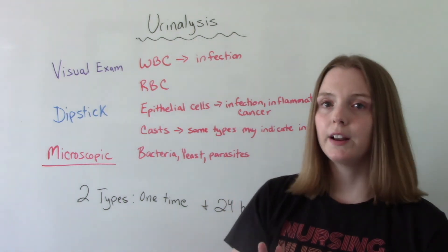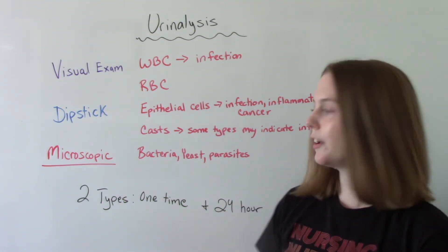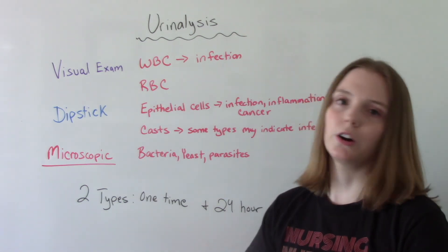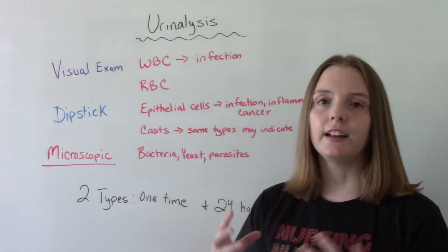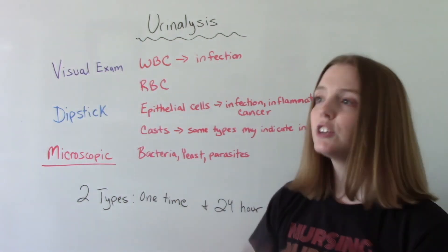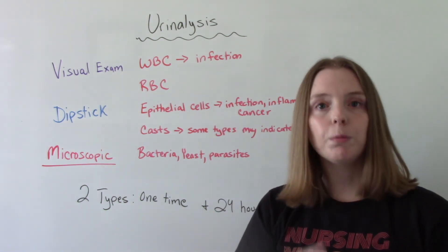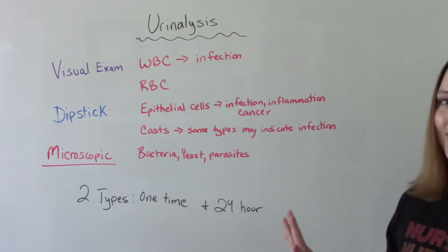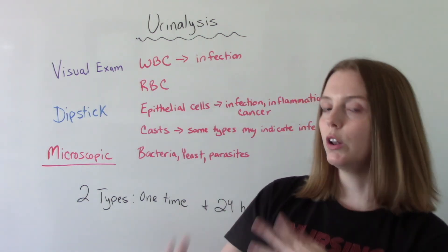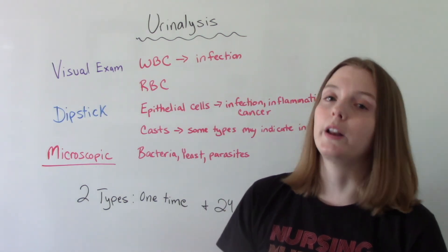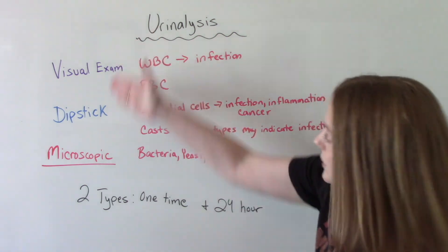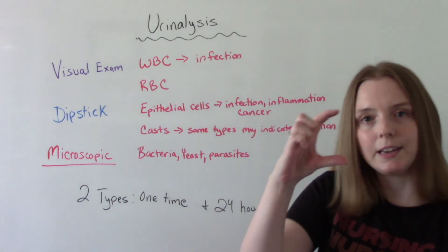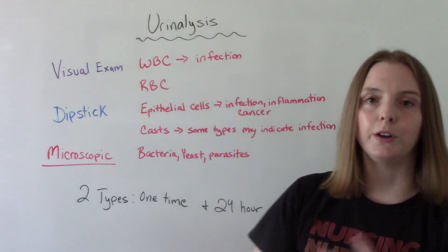When we talk about a UA, we're usually talking about the one-time UA — you go to your doctor's appointment or you're hospitalized and they have you provide a urine sample one time and they test it. But there is a second type of urinalysis called the 24-hour urine, and it's exactly what it sounds like: we collect all of your urine over a 24-hour period and then test it using these same three criteria, but with a much larger sample.